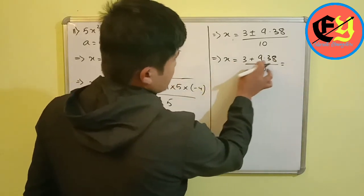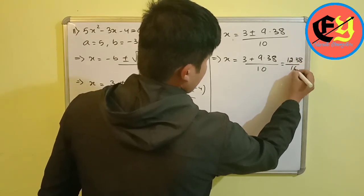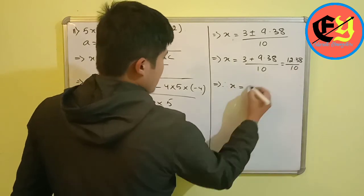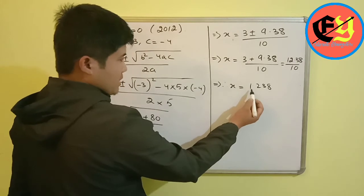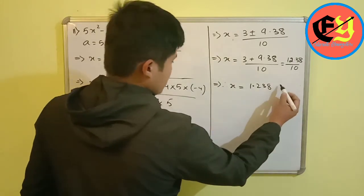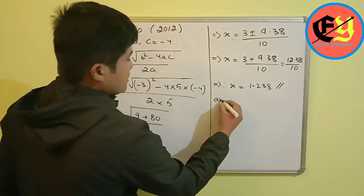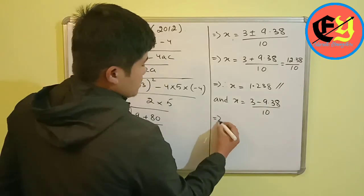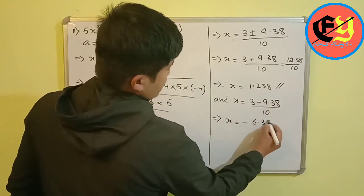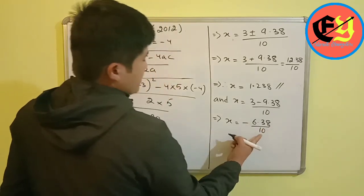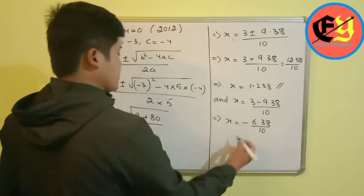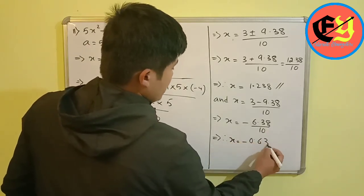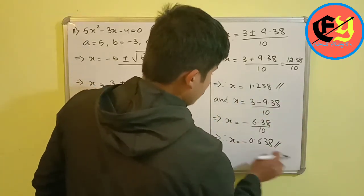Root 89 is approximately 9.38. So x equals (3 plus 9.38)/10 equals 12.38/10 equals 1.238, correct to 3 decimal places. And x equals (3 minus 9.38)/10 equals minus 6.38/10 equals minus 0.638. Therefore x equals 1.238 or x equals minus 0.638. Thank you.